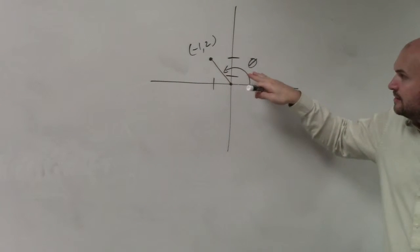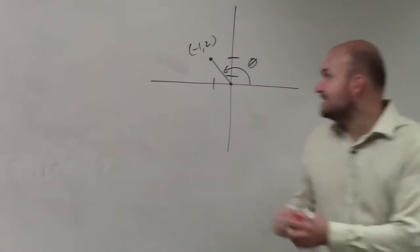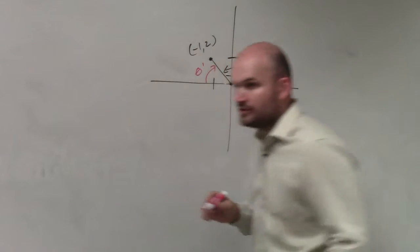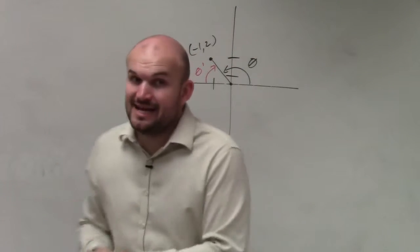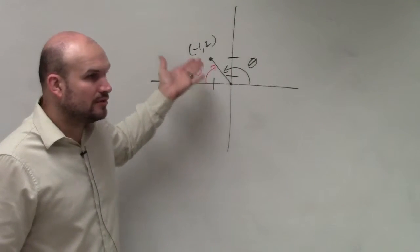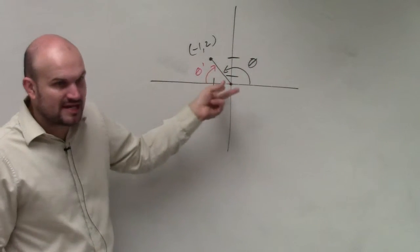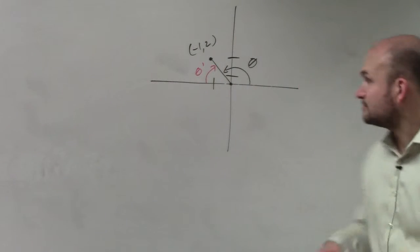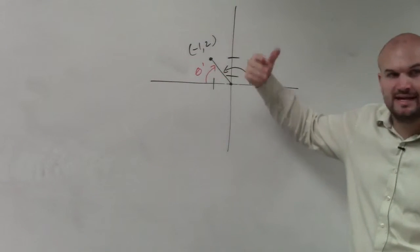If you have theta right here, we talked about reference angles — that this would be your reference angle. And what we said was the sine, cosine, and tangent of theta is exactly the same as your reference angle. So rather than using theta, we can just use the reference angle. What's nice about using the reference angle is we can now use it to create a triangle.